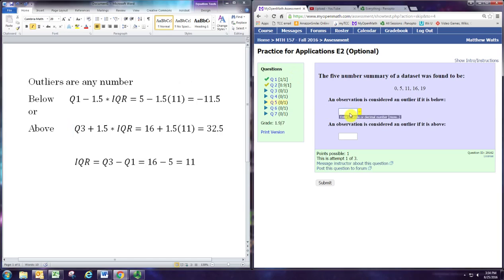So an observation would be an outlier if it was less than negative 11.5 or greater than 32.5.